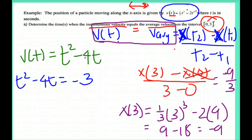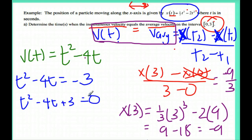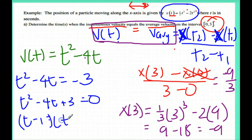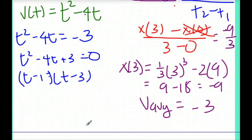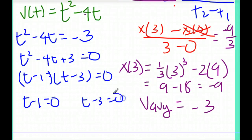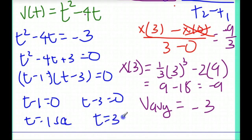What I'm going to get is t squared minus 4t plus 3 equals 0, and now it's easier to factor. I get t minus 1 times t minus 3. If I set these equal to 0, I get t minus 1 equals 0 and t minus 3 equals 0. So the two times that this actually happens is when t is equal to 1 second, or when t is equal to 3 seconds.